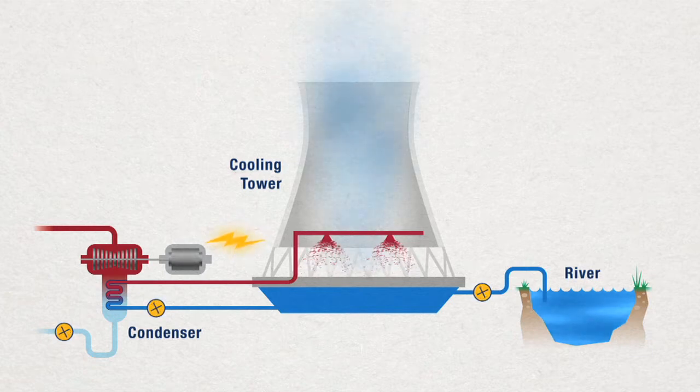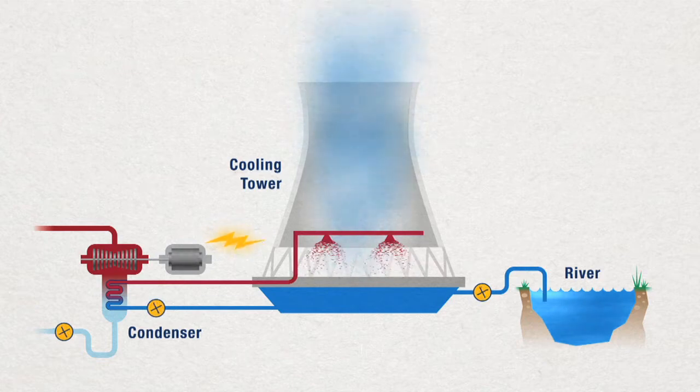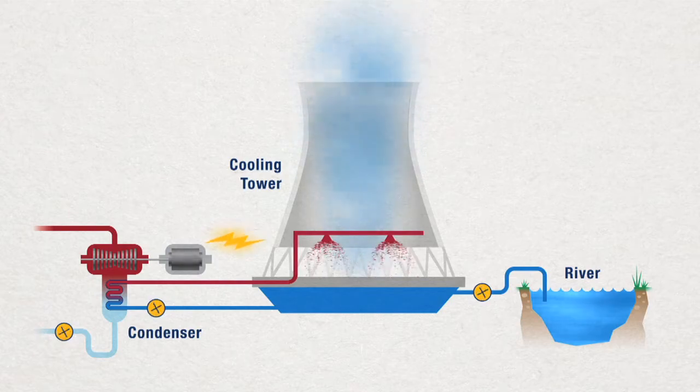As water falls, it heats the air around it, causing warm air to flow up through the cooling tower like a chimney. This creates a natural updraft through the tower.